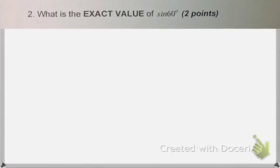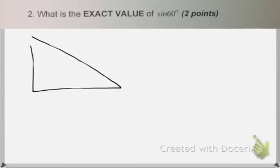For number 2, it asks what is the exact value of sine 60? I know that to find those exact values, I use my special right triangles. So this would be a 30, 60, 90.